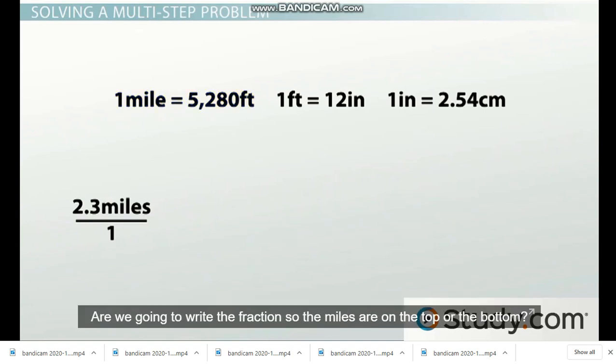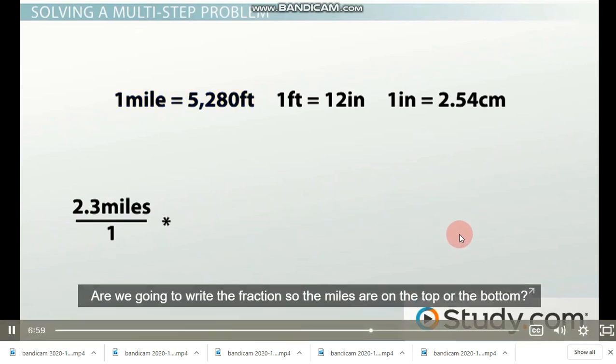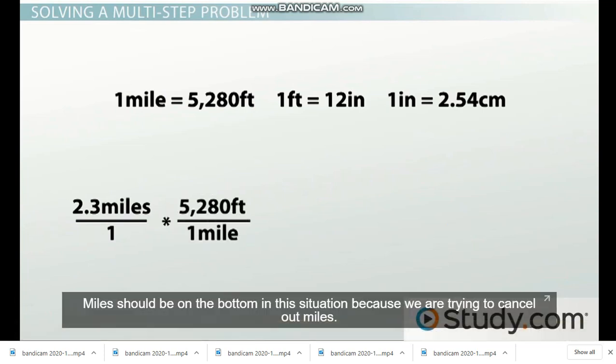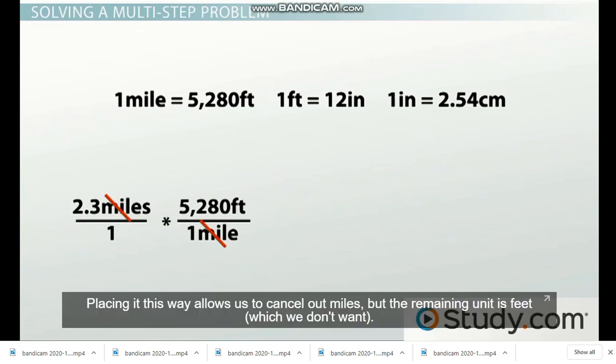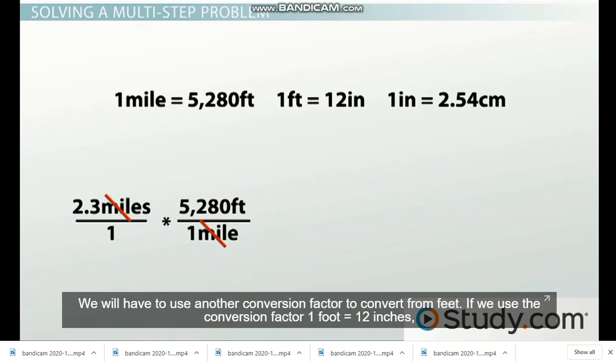The conversion factor that includes miles is 1 mile equals 5,280 feet. Are we going to write the fraction so the miles are on the top or on the bottom? Miles should be on the bottom in this situation because we are trying to cancel out miles. Placing it this way allows us to cancel out miles, but the remaining unit is feet, which we don't want.